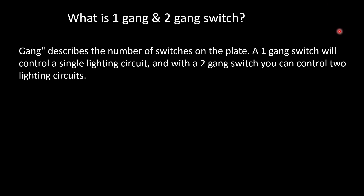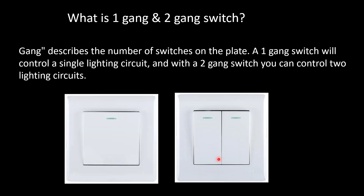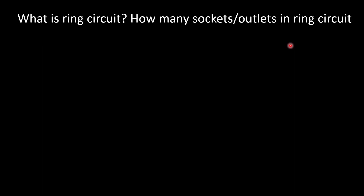What is a one gang and two gang switch? Gang describes the number of switches on a plate. A one gang switch controls a single lighting circuit, and with a two gang switch you can control two lighting circuits. Basically, if there is one switch on a switch plate, it is called one gang; two switches is two gang. Three gang and four gang switches are also available in the market.